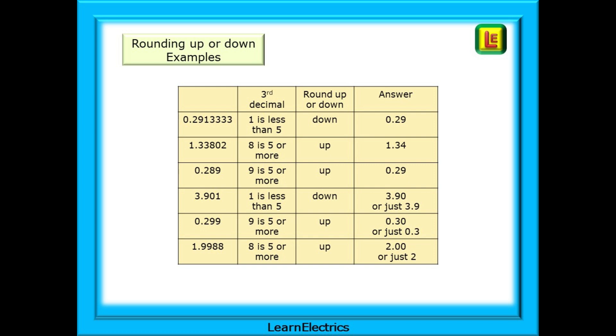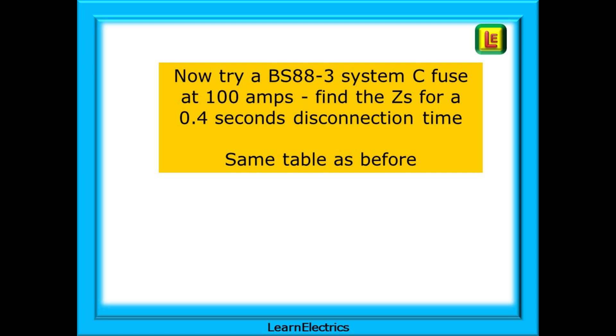If the third decimal number is 5 or more, it will affect the second number, but sometimes it will influence several numbers. Look at the bottom two rows of the chart. 0.299 will affect all three decimal numbers, making the answer 0.30 or just 0.3. The bottom row starts off as 1.9988. The third number is an 8, and this ripples through all the numbers to make 2.00 or just 2.